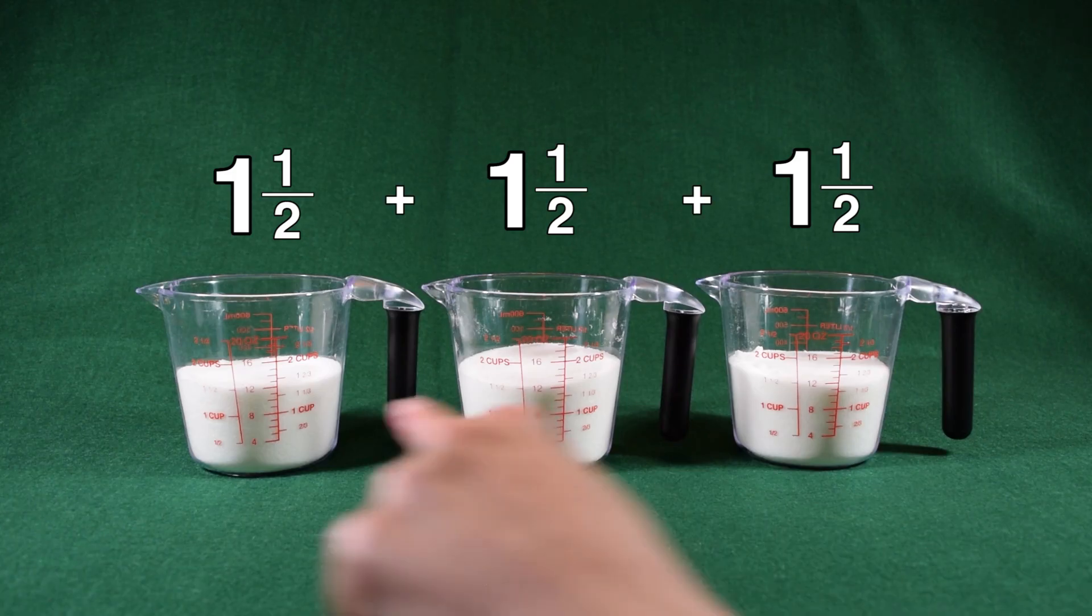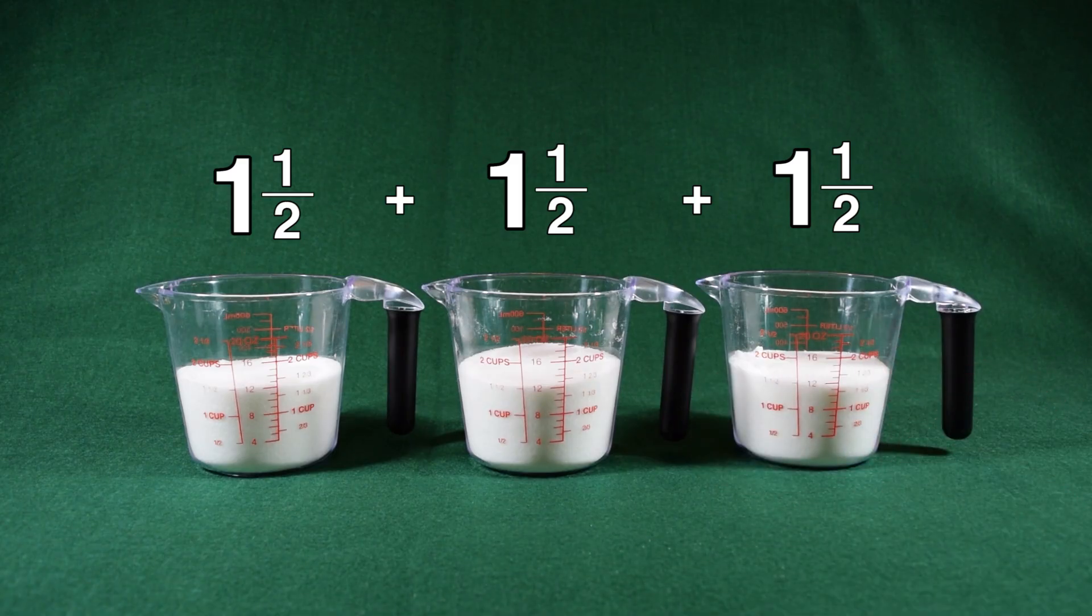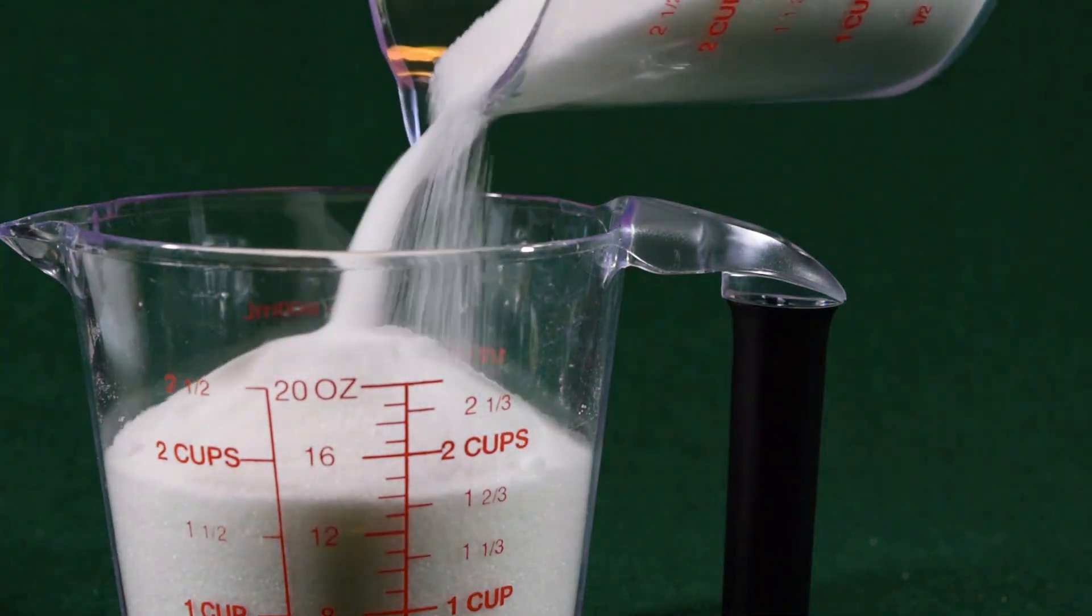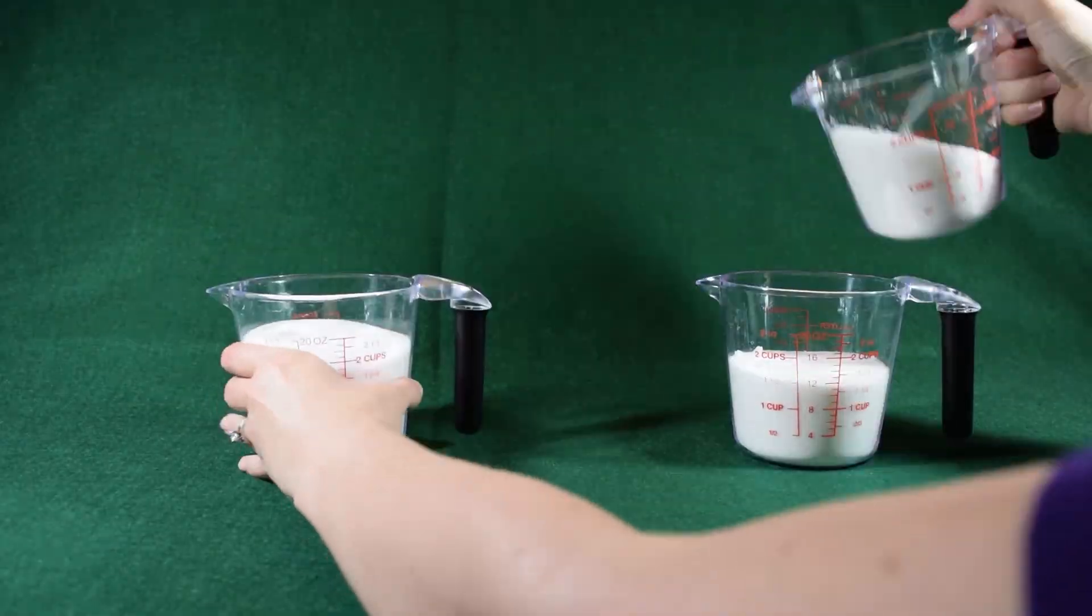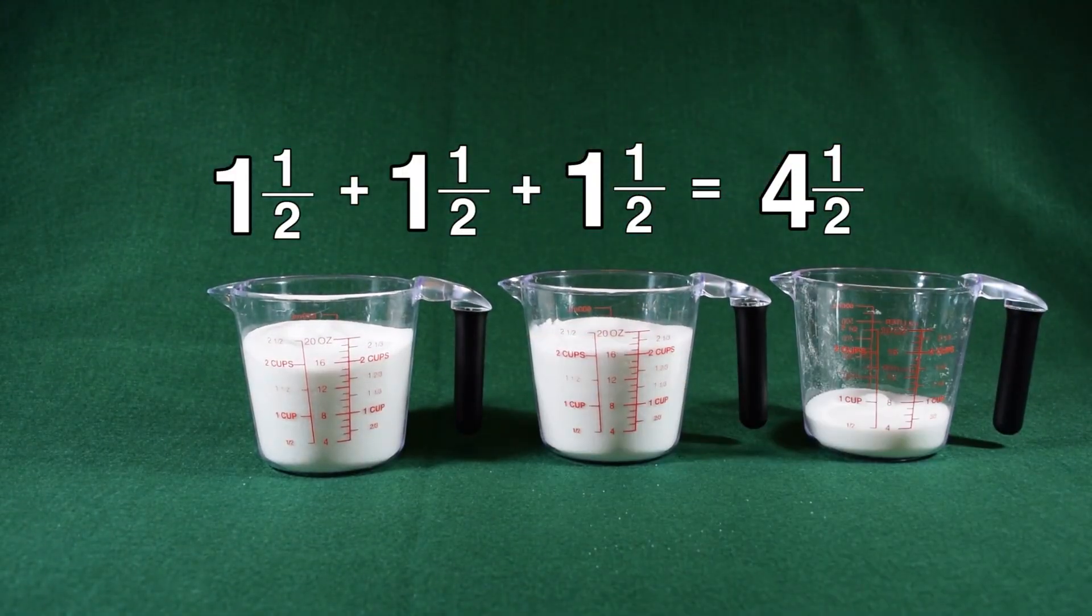We can start by adding one and a half cups plus one and a half plus one and a half for each of our batches. We add those together to get four and a half.